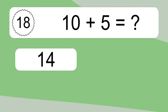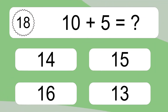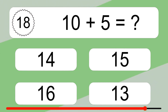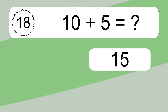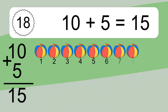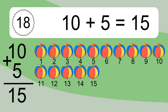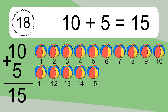10 plus 5 equals what? 10 plus 5 equals 15. Let's count it: 1, 2, 3, 4, 5, 6, 7, 8, 9, 10, 11, 12, 13, 14, 15.